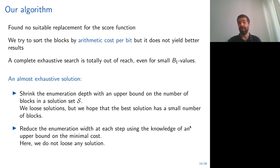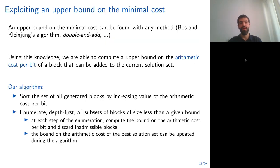So we tried to reduce the enumeration, the exhaustive search. First, we shrink the enumeration depth by using an upper bound on the number of blocks in a solution set. So here we lose solutions, but we hope that the best solutions and the good solutions have a small number of blocks. Then we find a way to reduce the enumeration width at each step using the knowledge of an upper bound on the minimal cost. Using this, we do not lose any solution. Note that an upper bound on the minimal cost can be found with any method, like Bos and Kleinjung's algorithm.